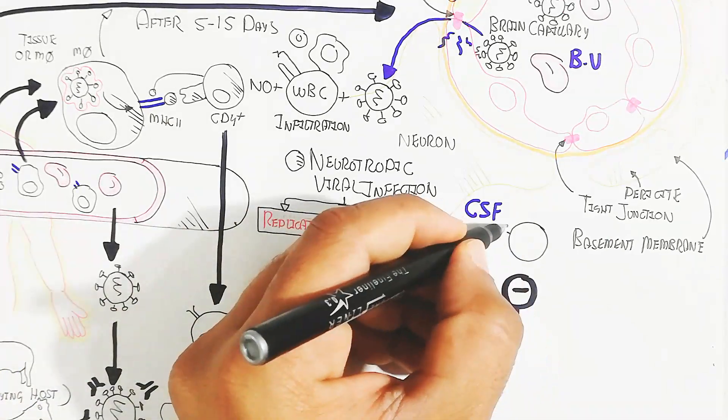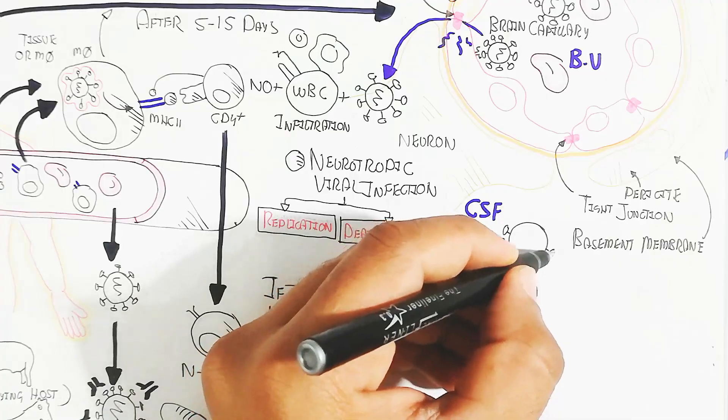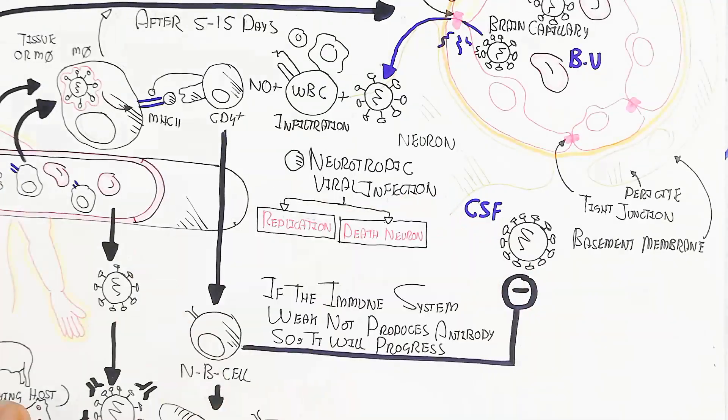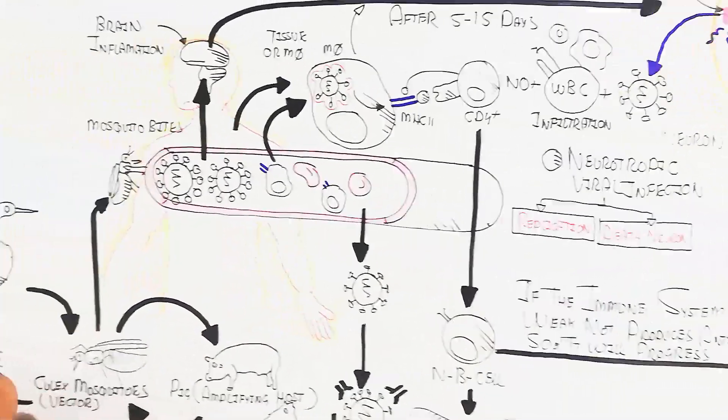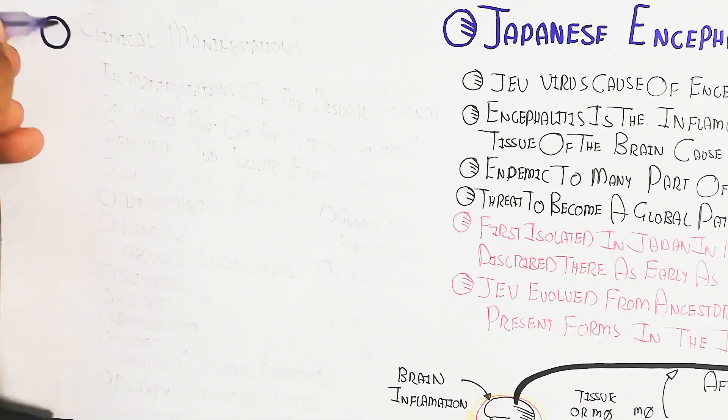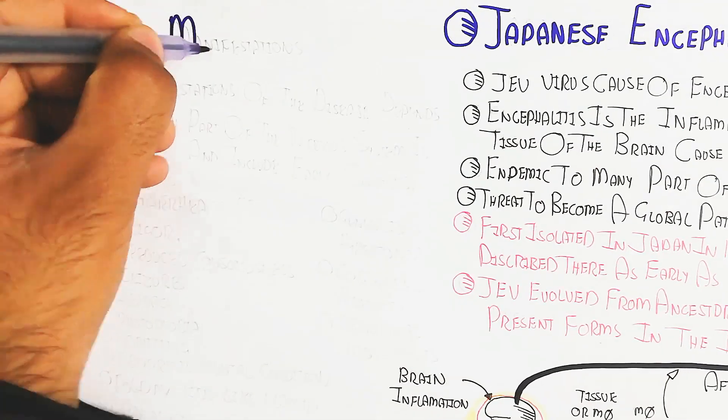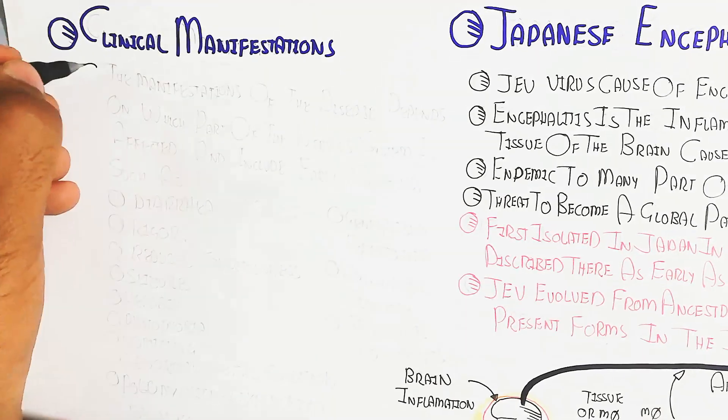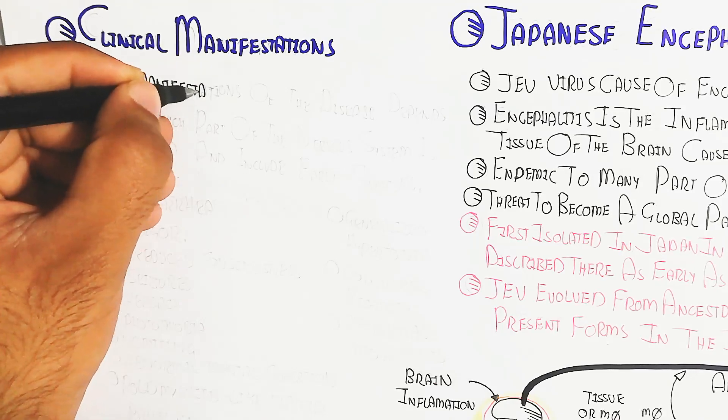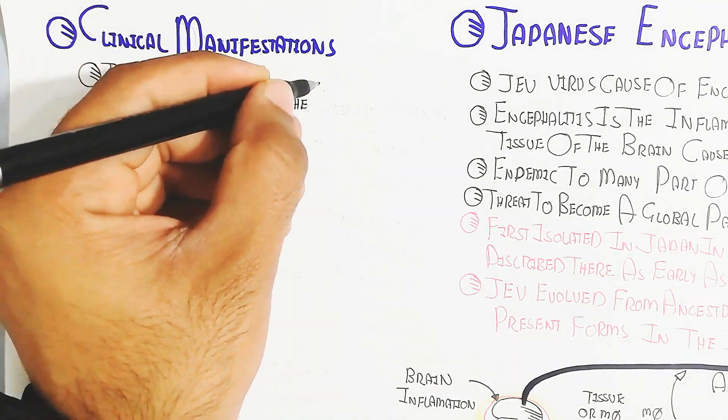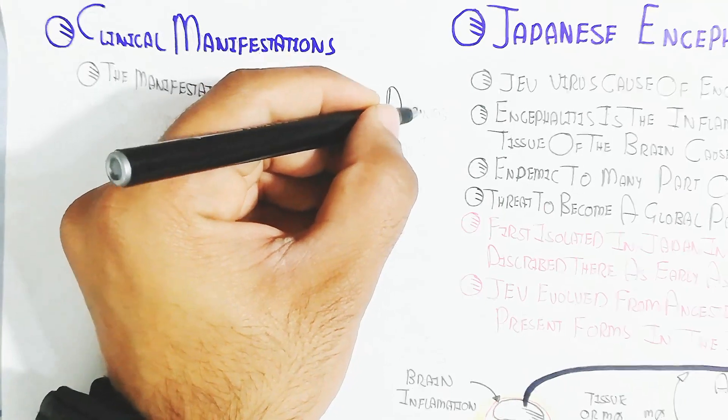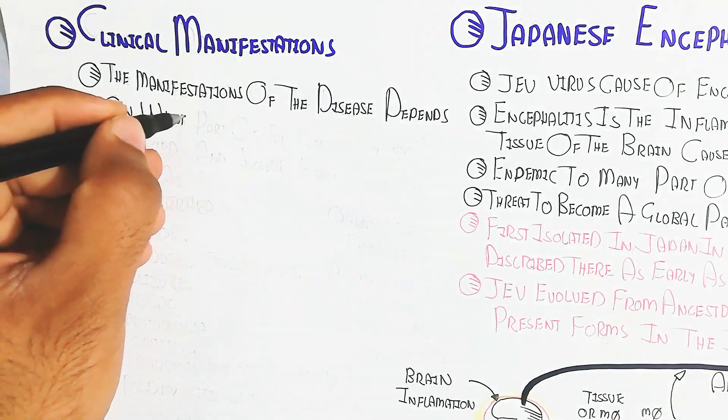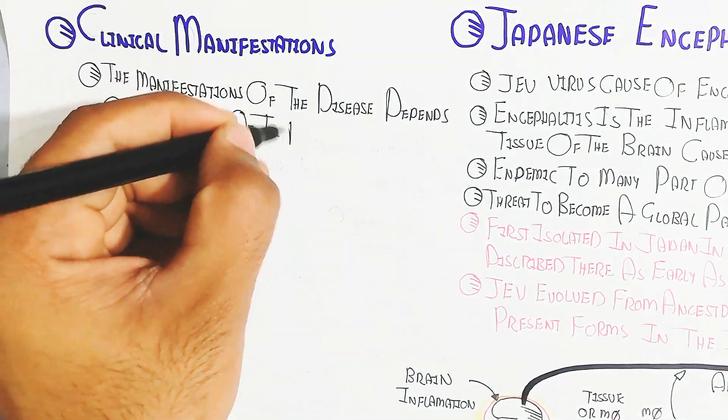This will cause severe cases of JEV infection leading to death in 20 to 30 percent of cases. However, the immune system can clear this easily in most cases. Clinical manifestation is the manifestation of the disease.